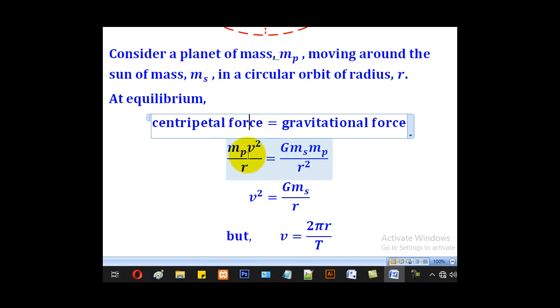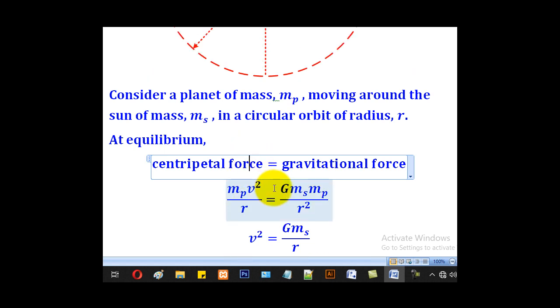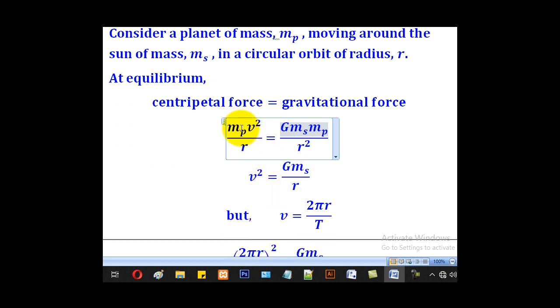Centripetal force is given by the formula mv squared over r, and the gravitational force is the product of the masses divided by the mean distance apart which is r squared, multiplied by the gravitational constant capital G.